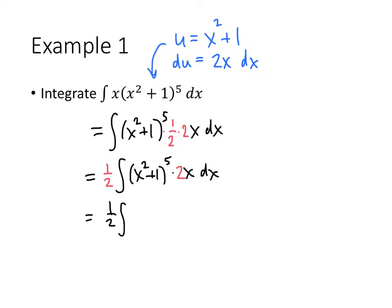So I get 1 half, x squared plus 1 to the 5th, well, u was x squared plus 1, so that's u to the 5th, and 2x dx, that's my du. So now I have an entirely u integral, I don't have any x's anymore, that's good, that's what we want. And now I can take my antiderivative.